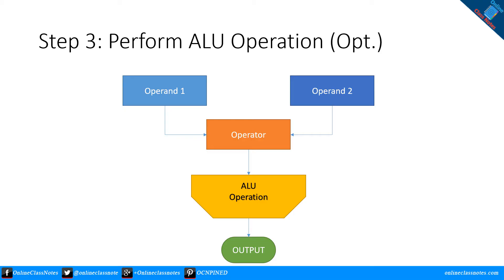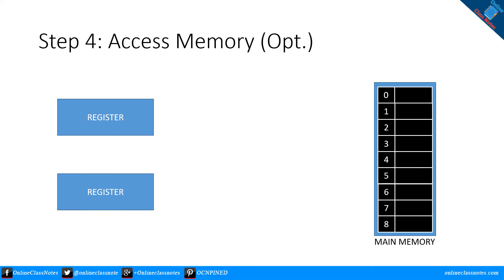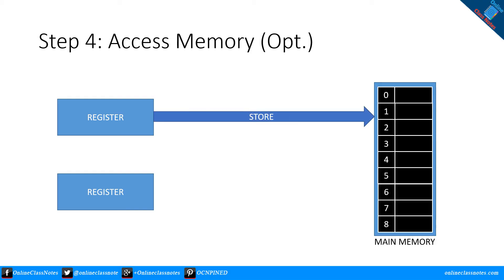Step 4: Access memory. There are only two kinds of instructions that access memory: load and store. Store copies a register value to memory, and load copies a value from memory to a register. Any other instruction skips this step.